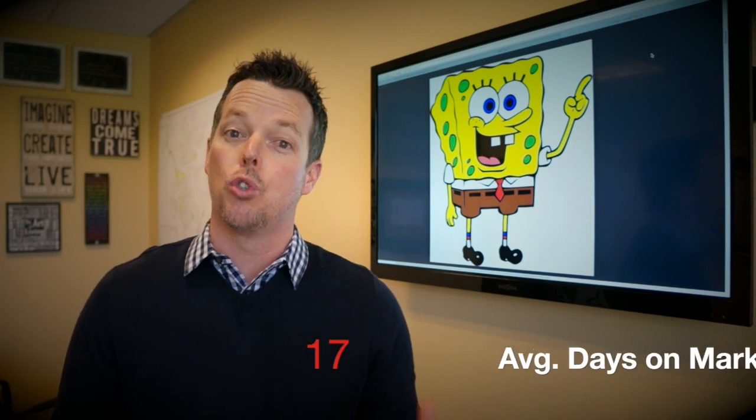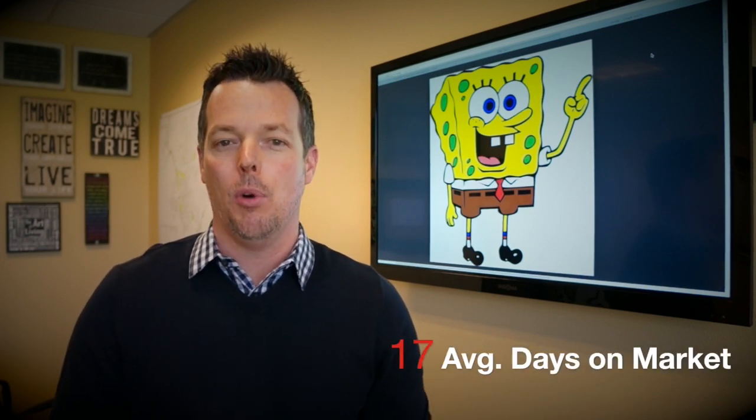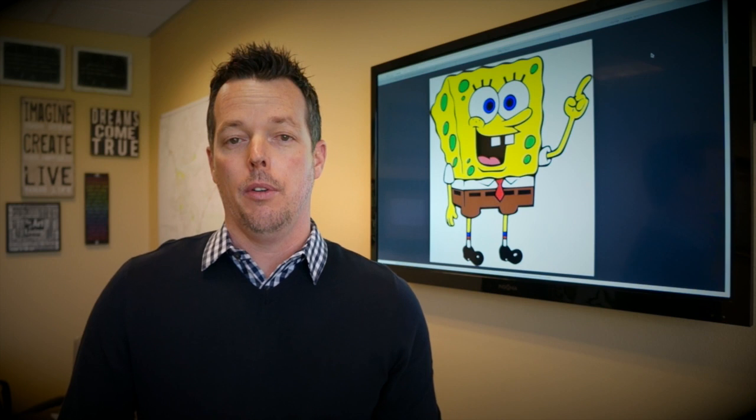Now our days on market, this statistic changed since last month. We were at 44 average days on market last month, we've dropped to 17 days on market. Now it's important that you understand that this is probably going to be more of a moving target each month because depending upon the price point of the homes that are for sale, which ones are going into escrow quickly.